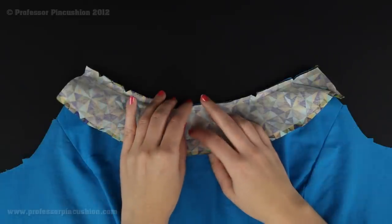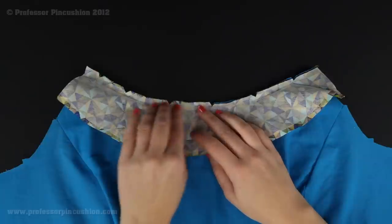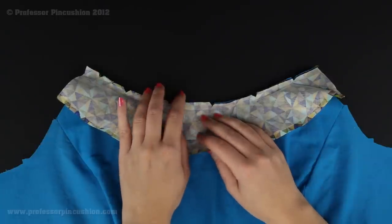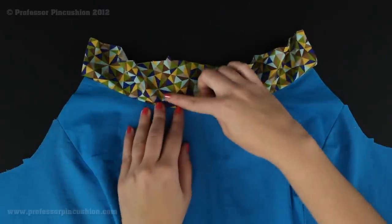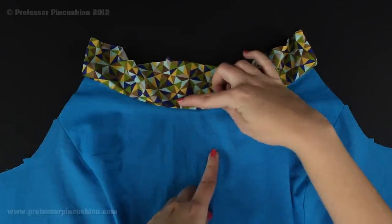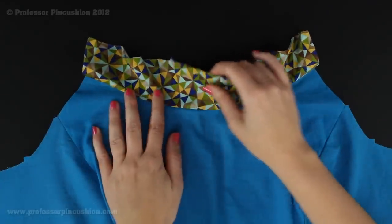In this particular case, we're not going to iron our seam allowance open like this. We're going to keep it closed and it should rest right underneath our facing when we press it up. So if I feel right along this edge, I can feel the top of my seam allowance and make sure that it's all going to be right underneath there.